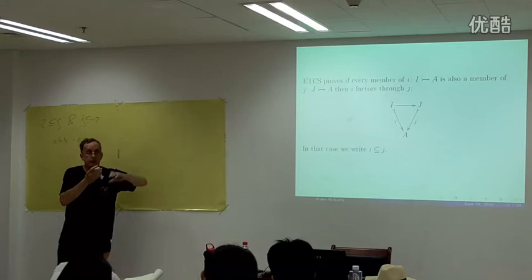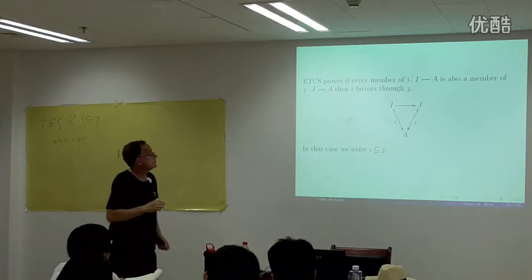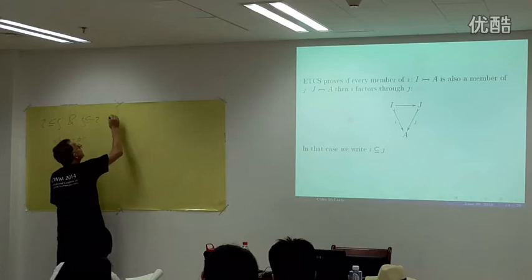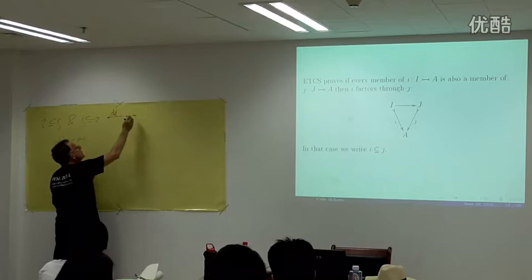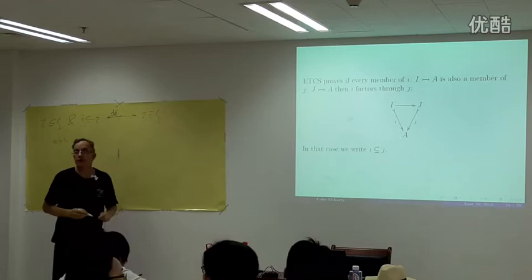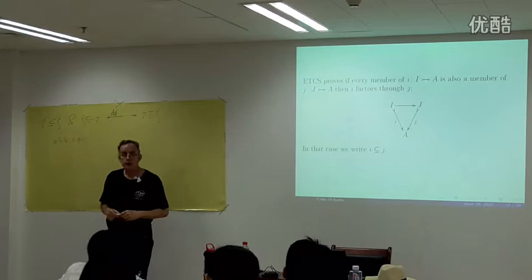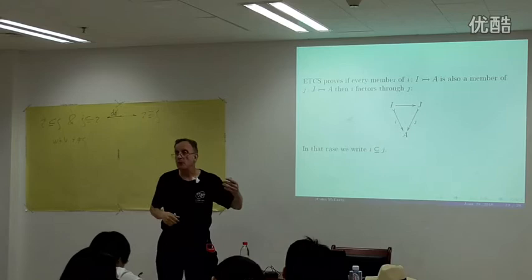We define the notation 'I is equivalent to J' to mean they have all the same members but may not be equal. That's a genuine difference from ZFC, where two subsets with the same members are equal. Here we can only say they're equivalent.